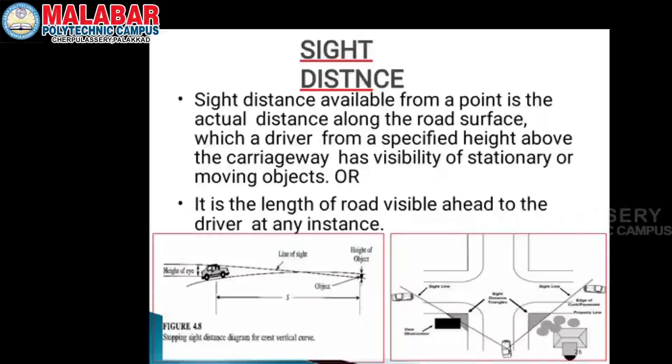This is the sight distance. The sight distance is the main sight distance. The sight distance available from a point is the actual distance along the road surface — this is the distance visible to the driver from a specific height.